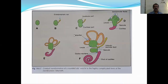Here you can see this is the otic vesicle. This is the cochlear part and this is the vestibular part. This is the saccular part and this is the utricular part. Ultimately, this saccular part — the ventral part — will give rise to the saccule and the cochlear duct.